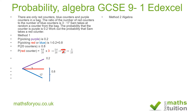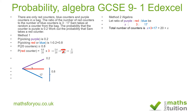Let the ratio of purple to red to blue be x to 3 to 17. We know 3 and 17 already; we don't know x. Adding x plus 3 plus 17 gives 20 plus x. The probability of picking a purple counter is x divided by (20 plus x), and this equals 0.2. Cross-multiplying gives x equals 0.2 times (20 plus x), which expands to x equals 4 plus 0.2x.